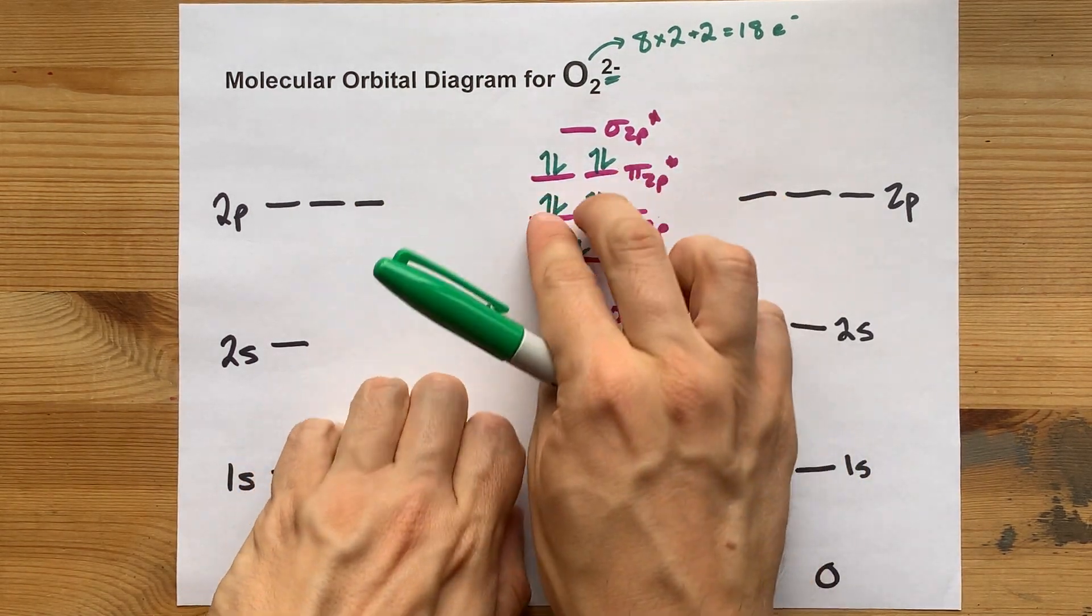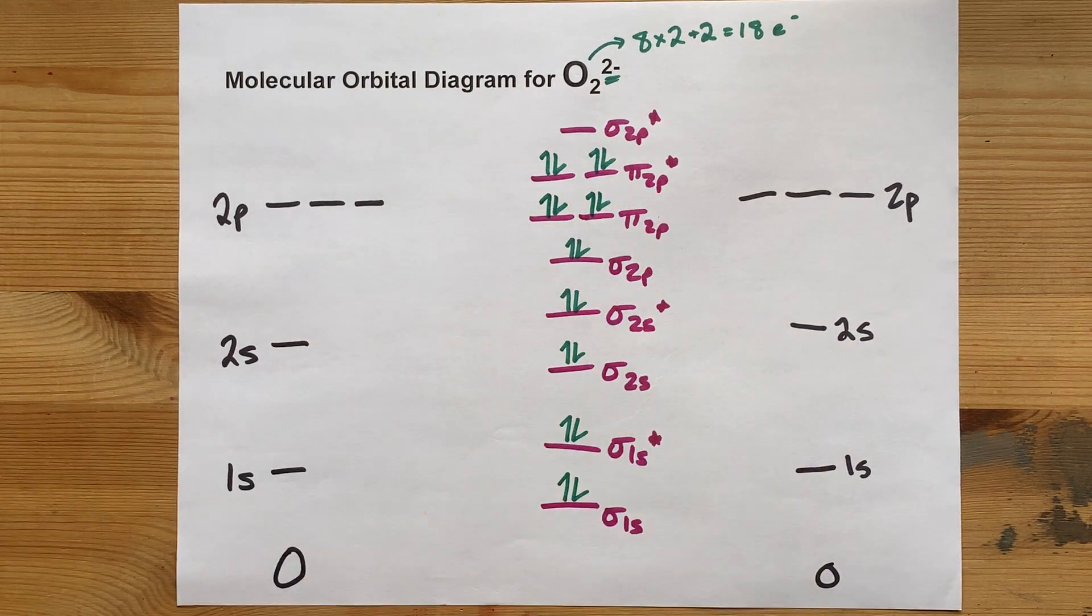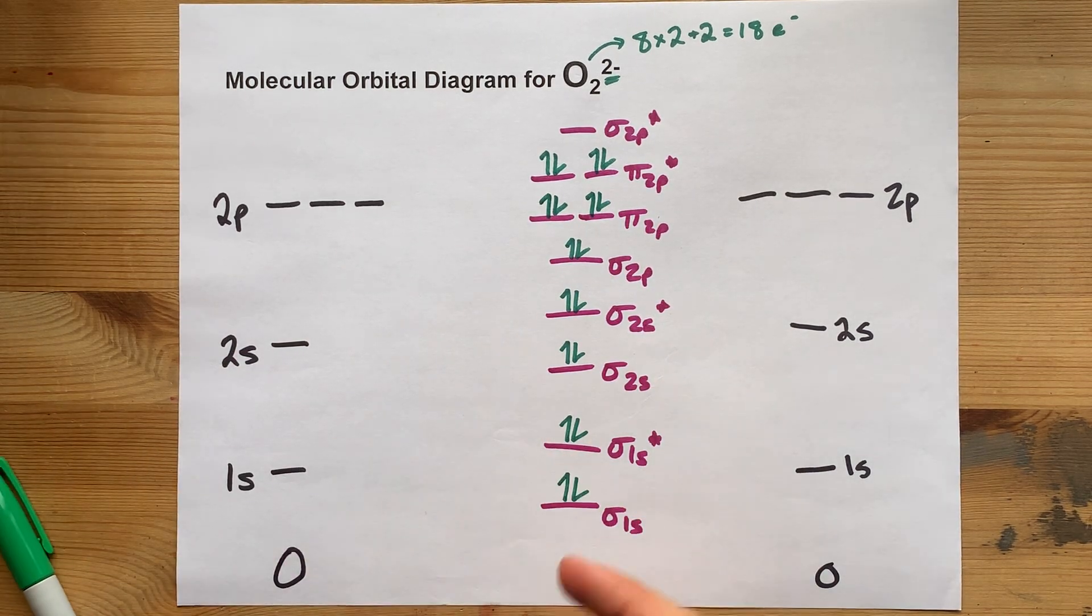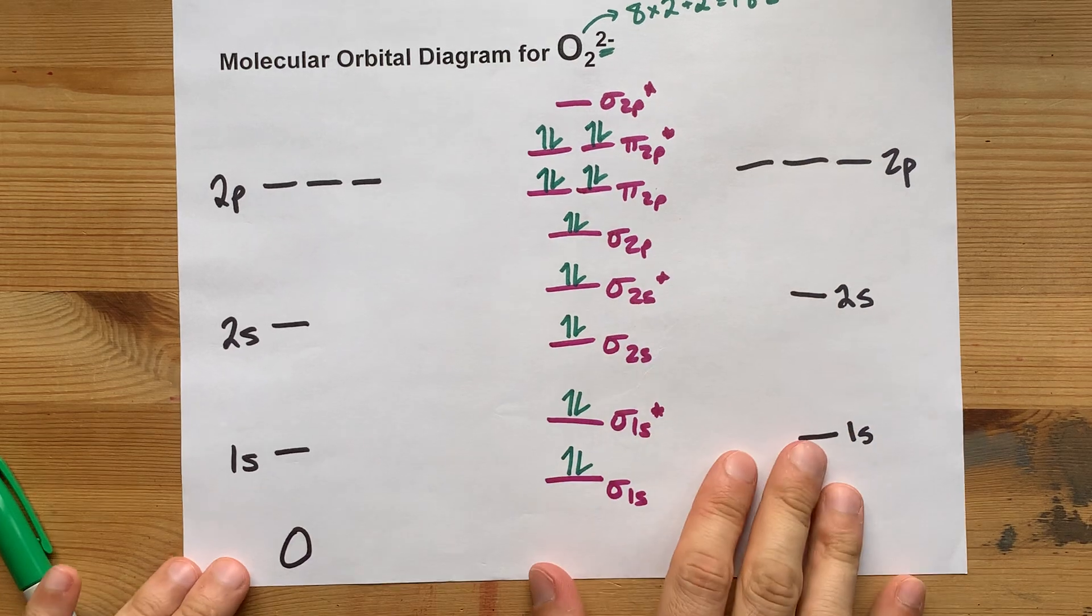Notice that I spread them out before I doubled them up. That's Hund's rule. This is your completed molecular orbital diagram.